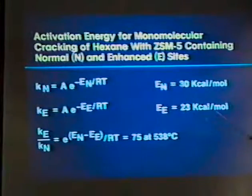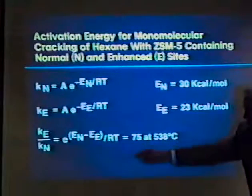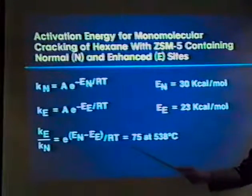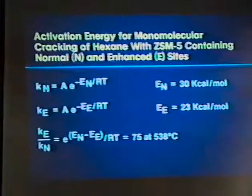And if you say how much difference is made in the relative rate constants per site, this would be about a factor 75 at this temperature. If we do this at 300 degrees, then the factor is 900 because of the effect of the temperature. And that's what we observe. So we seem to have sites with much higher activity.